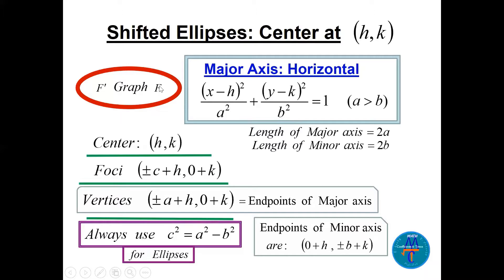The center is (h, k). We have two foci F and F′ at (h ± c, k). The vertices V and V′ are at (h ± a, k) — these are the endpoints of the major axis. In ellipses we always use c² = a² − b². The endpoints of the minor axis are at (h, k ± b). The important part is to find a² and b² from the equation — a² is always the bigger number.